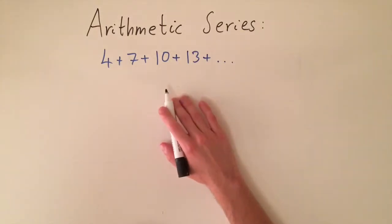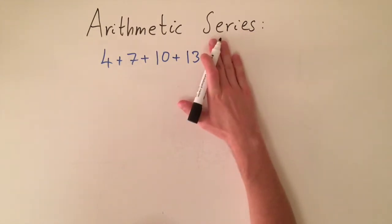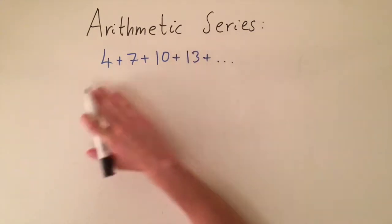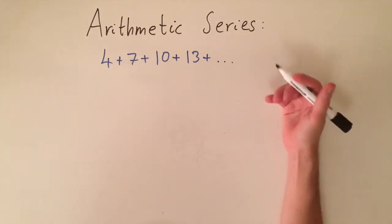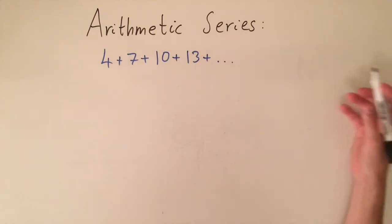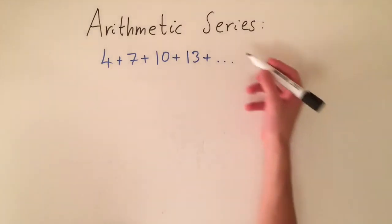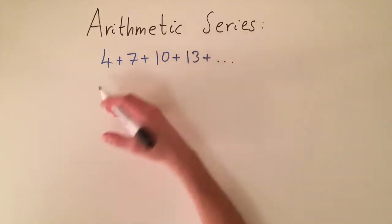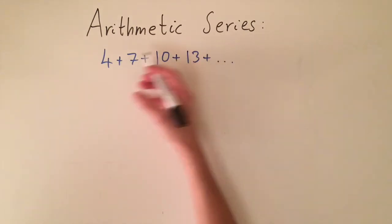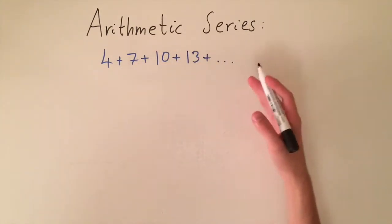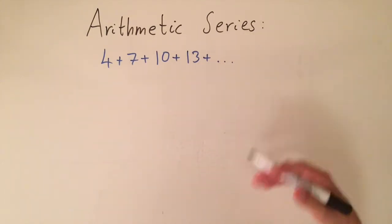There are two types of series: finite series and infinite series. A finite series is when we have a last term — a finite number of numbers being added together. An infinite series is when we're adding an infinite number of numbers together and it just keeps going on forever. We can ask: what is going to be the total sum of the series?